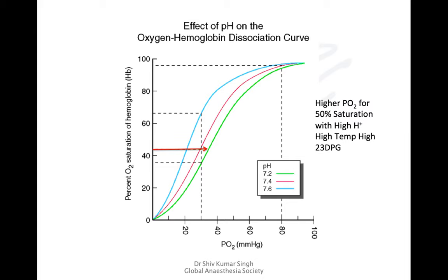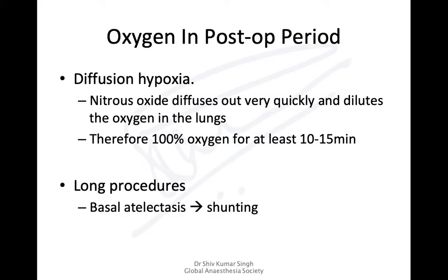In the postoperative period, patients require oxygen. The commonest cause is diffusion hypoxia — nitrous oxide diffuses quickly and dilutes the oxygen in the alveoli, so unless you deliver 100 percent oxygen or a higher FiO2, the patient can become hypoxic. As long as the patient is breathing and can eliminate nitrous oxide with some extra oxygen supplied, desaturation is prevented. In long procedures, the patient has been lying down; without PEEP, basal atelectasis leads to shunting, requiring higher FiO2.